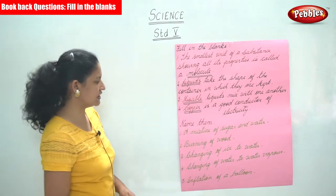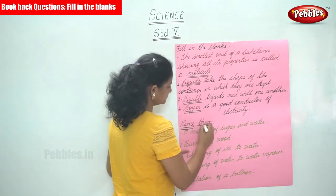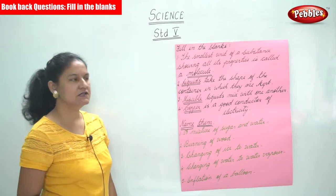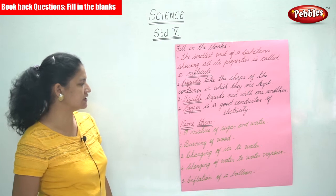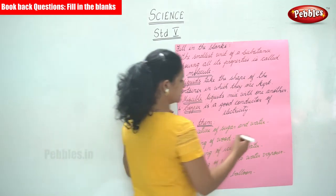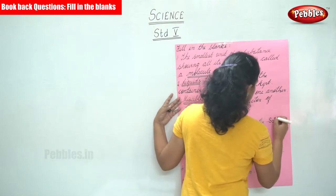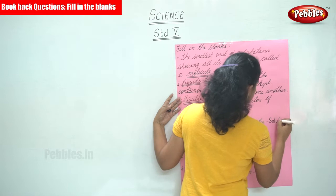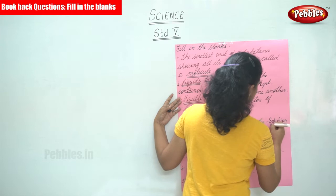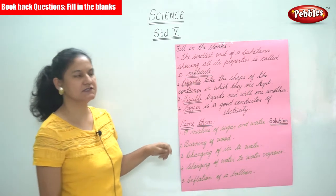Moving on to the next exercise, we are going to name them. The first one: a mixture of sugar and water is a solution — we call it a solution, or miscible liquid, but we take it as solution. So a mixture of sugar and water is a solution.